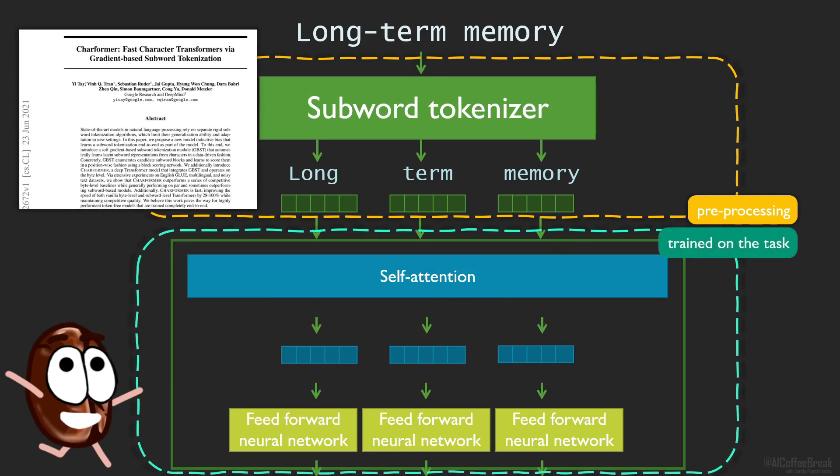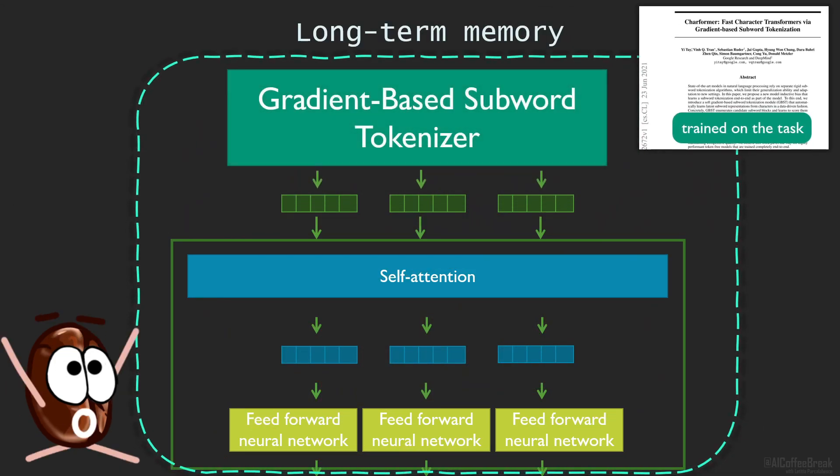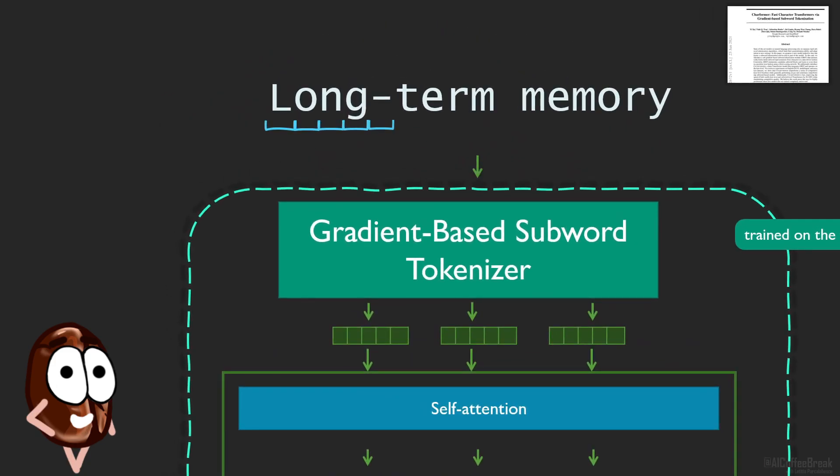Here is where the transformer comes to save the day. What if you would have a completely end-to-end language transformer that does not require this tokenization preprocessing step, and takes the data in as is, in characters, and dynamically computes fitting representations for your task and data on the fly?